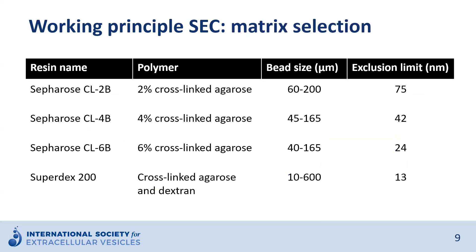In this table, I have listed some examples of commonly used resins for EV isolation by SEC. You have the Sepharose CL family, which consists of agarose with different percentages of cross-linking, and these beads have pore sizes of 75 nanometers down to 24 nanometers. Resins with smaller pore sizes, such as Sepharose CL6B and SuperDEX 200, will limit loss of EVs and focus them at higher concentrations in a smaller number of fractions. But at the same time, this might also lead to contamination with protein if the column is not large enough.